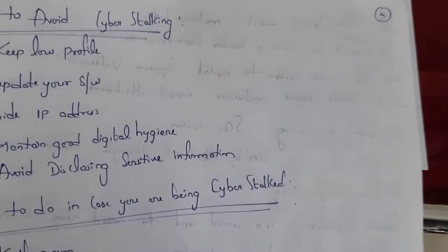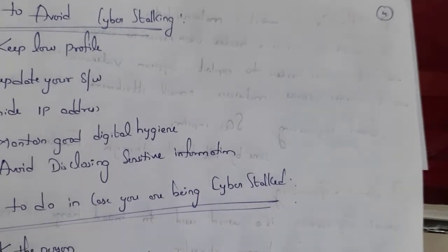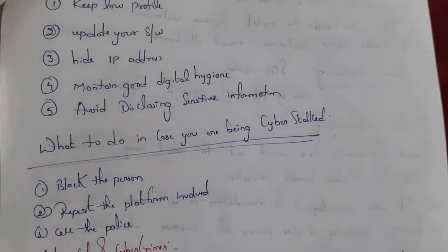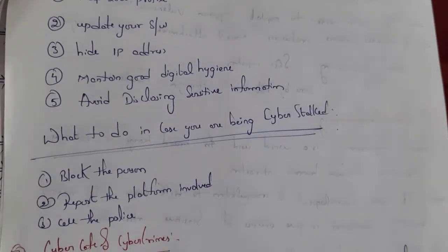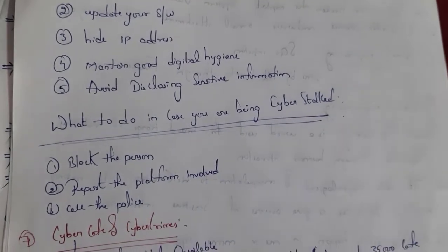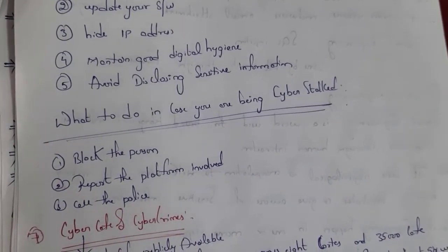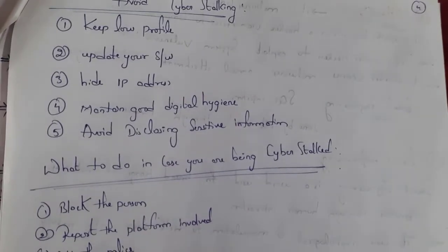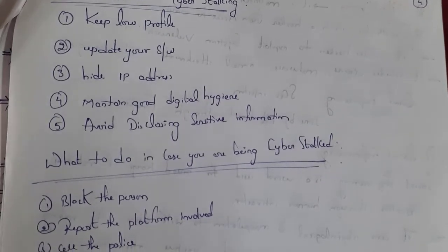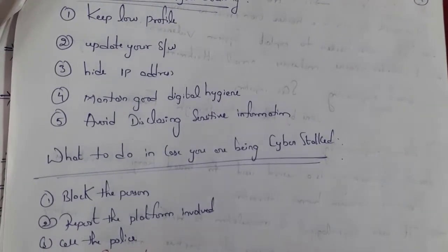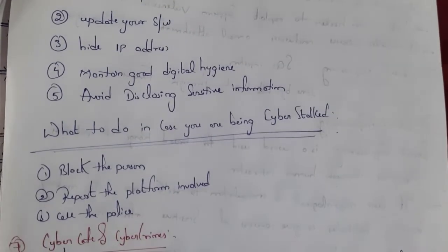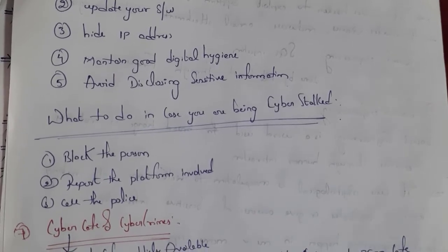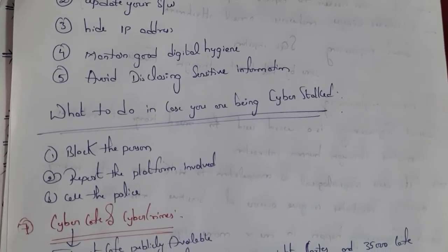By following these methods you can avoid cyber stalking. First, keep a low profile — for example on Instagram, don't give your complete details such as birthplace; just give basic information like name and place. Next, use up-to-date software. Next, hide your IP address. And last, avoid disclosing sensitive information on social media accounts.